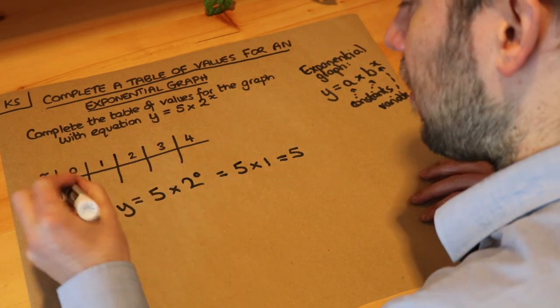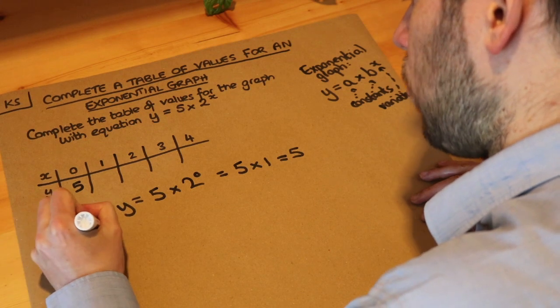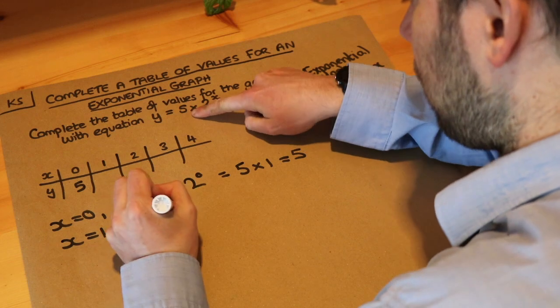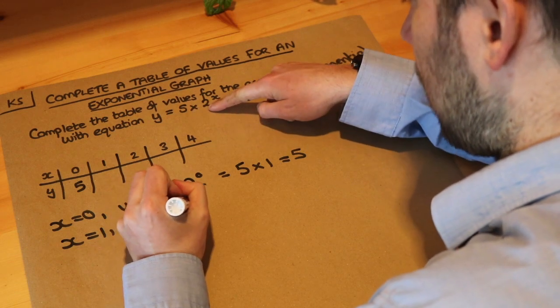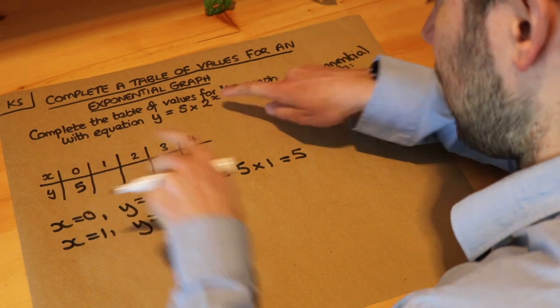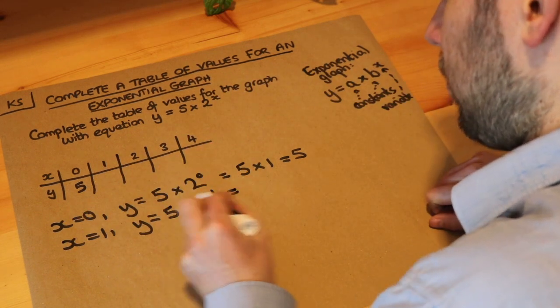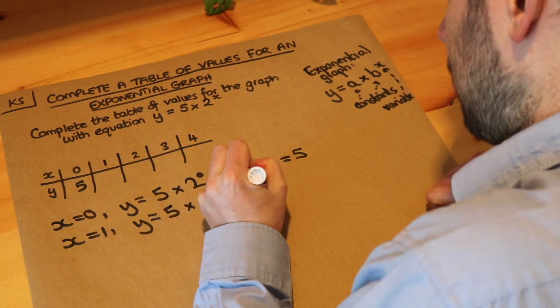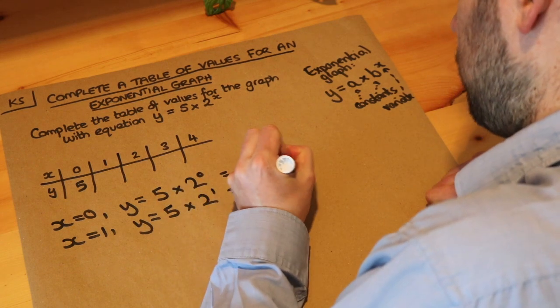What about when x is one? Now this is a bit easier now. If x is equal to one, the y value will be again, let's use this equation, it's five multiplied by two to the power of x. Well, x is one. So we just get five times, or two to the power of one is just two itself. So we get five times two which is equal to ten.